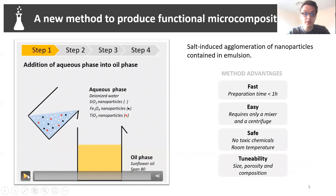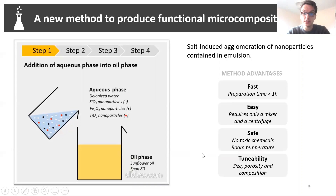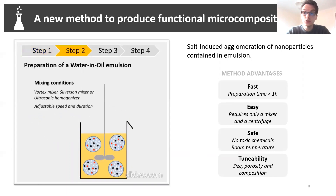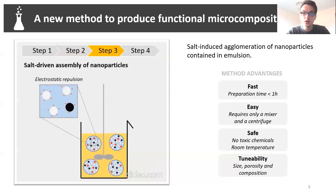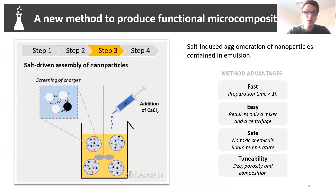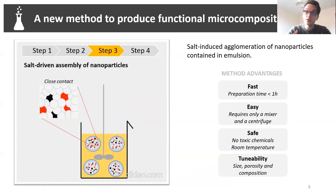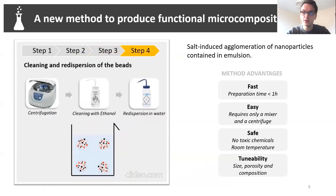Here is an overview of how we prepare the system. First, we have two phases: an aqueous phase composed of nanoparticles, and an oil phase. The first step is to mix those two phases together to create an emulsion — water droplets dispersed in oil. In the water droplets, nanoparticles repel each other due to their surface charges. When you add salt, you can screen the charges and agglomerate them together, creating a block which we call a bead. The bead size is directly linked to the size of the water droplet when you add the agglomeration. The last step is to clean your beads and use them for water treatment.